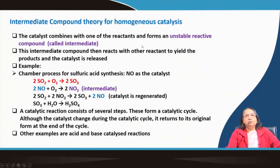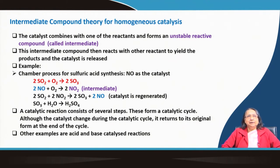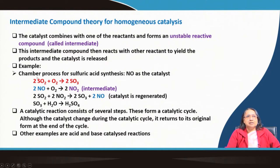The intermediate compound theory for homogeneous catalysis states: the catalyst combines with one of the reactants to form an unstable reactive compound called the intermediate. This intermediate then reacts with other reactants to yield the products and release the catalyst. This is also illustrated in the lead chamber process for sulfuric acid synthesis, where nitrogen oxide is used as the catalyst — the main reaction being SO₂ reacting with O₂ to give SO₃.